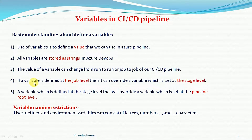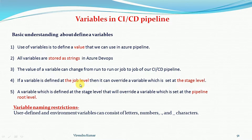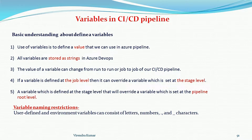If a variable is defined at the job level, it can override a variable which is set at the stage level. If you define the same variable at both job level and stage level, the job level variable overrides the stage level one. Similarly, a variable defined at the stage level can override a variable set at the pipeline root level. We will see in the video how to define variables at the job level, stage level, and root level.